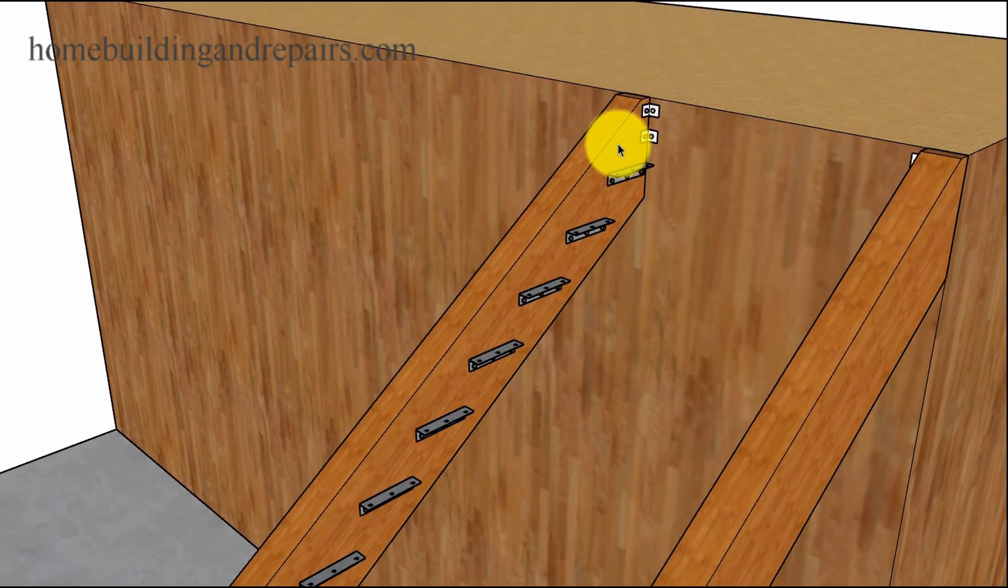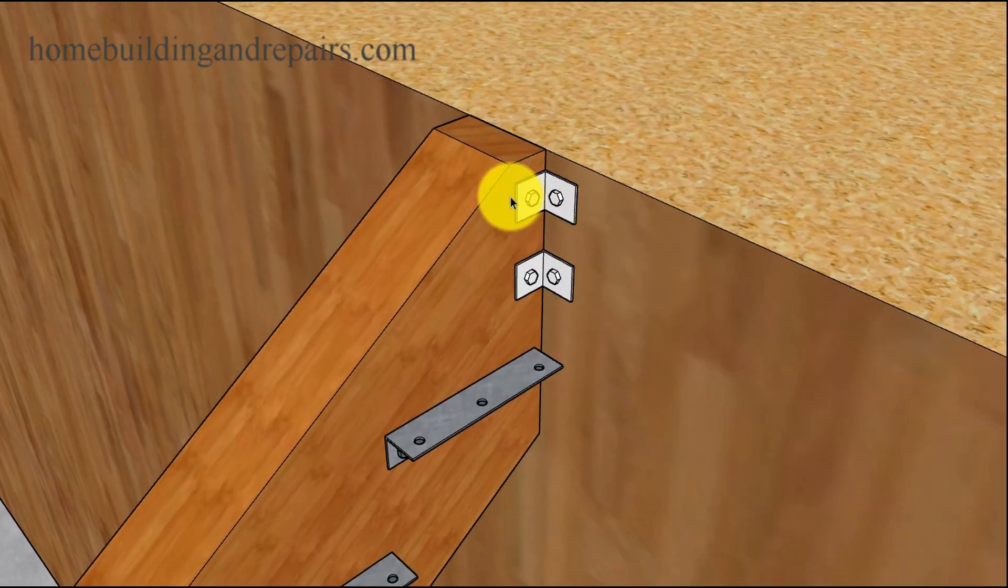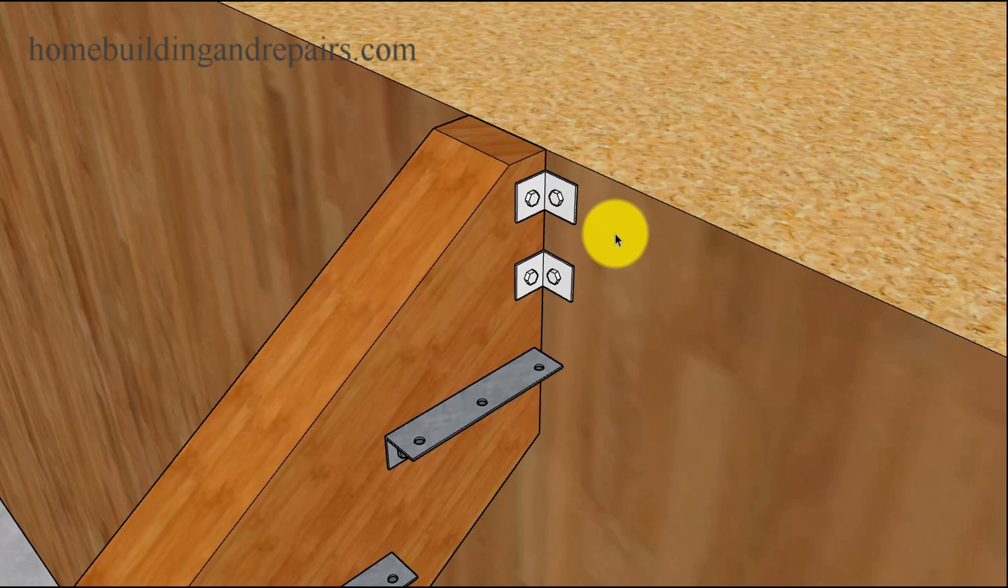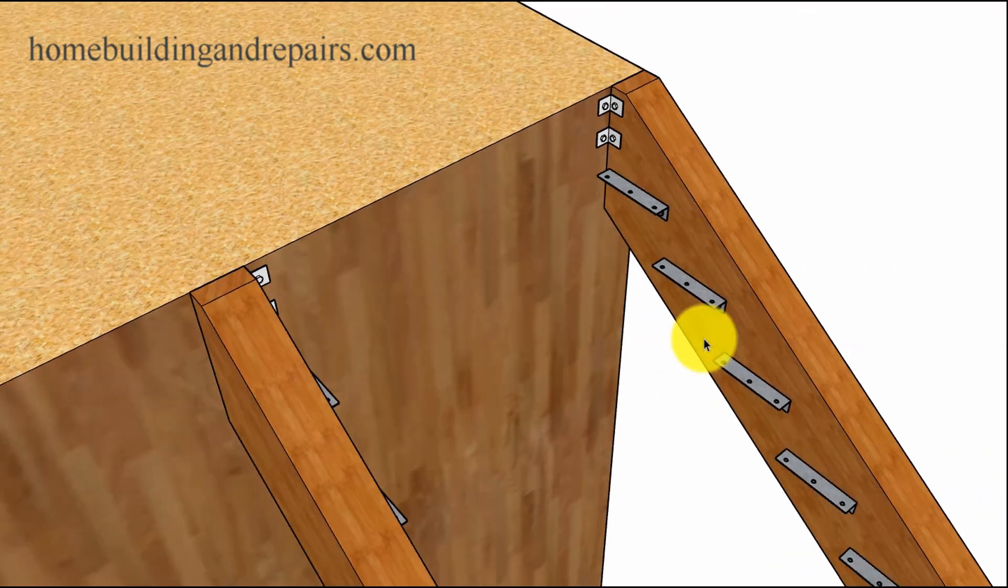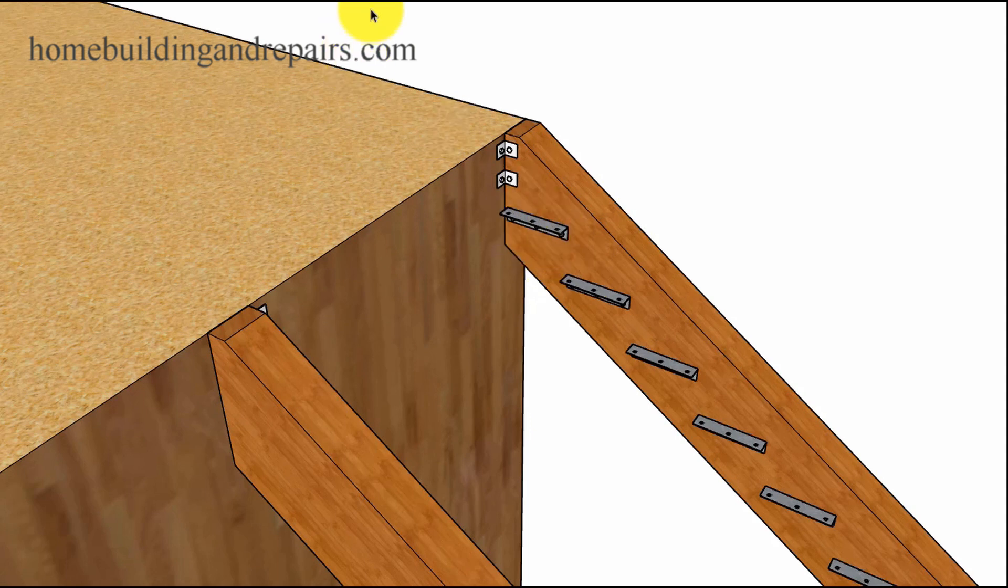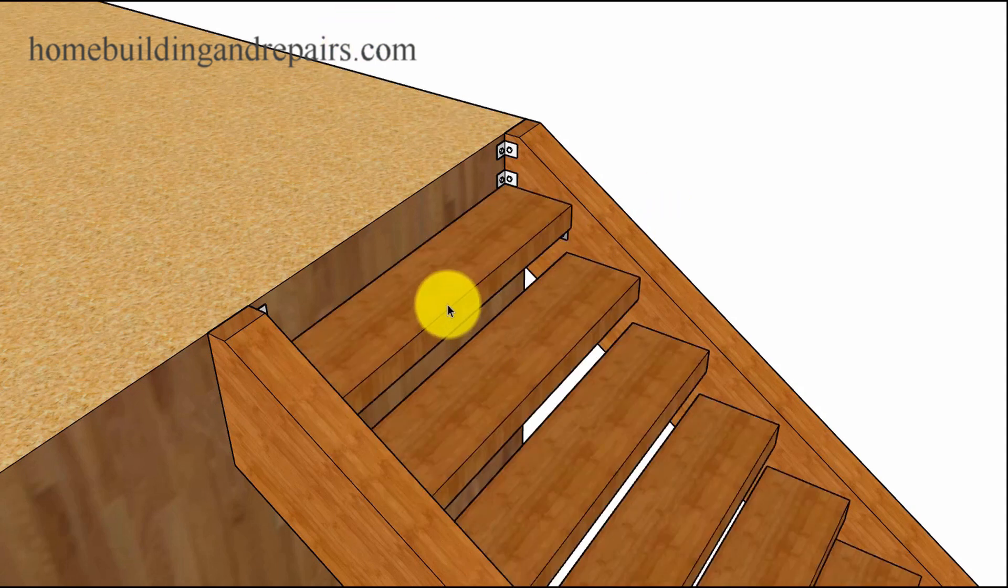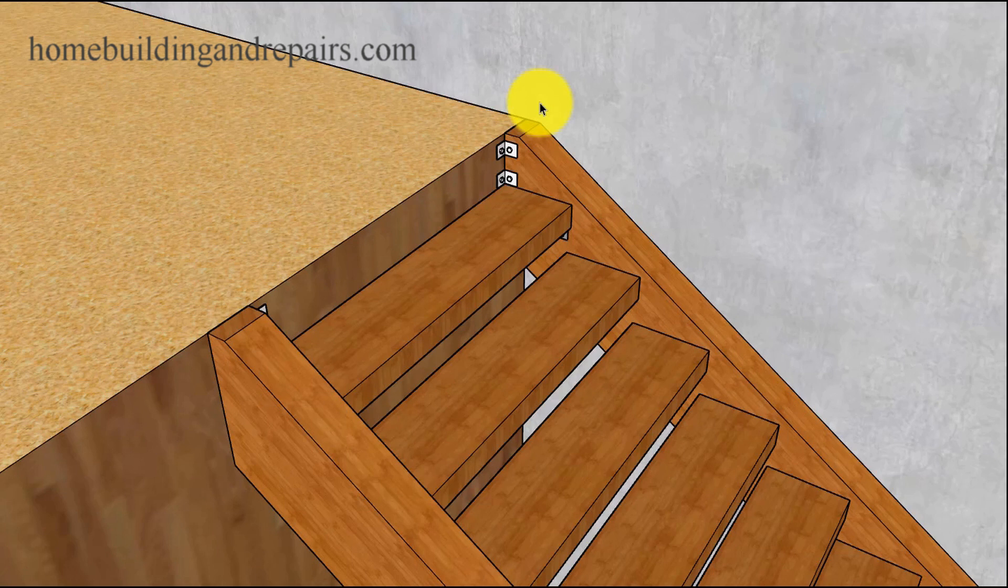But here are some brackets here that are going to attach the stringer to the framing, the floor joist, or whatever the head out is going to be. Or even the framing, even the wall framing. Another view of it there. Brackets. And the 4x12 treads.